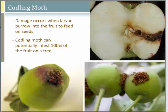Codling moth is the primary insect pest of apples and pears — the worm in the fruit. It's actually the larva or caterpillar of a moth, and it prefers to feed on the seeds of the apple, tunneling right through the flesh. It's such a successful pest that almost any untreated tree in Utah may potentially have 100% of the fruit infested. Infested fruit will have frass — the larvae's excrement — pushed out, which looks like sawdust on the outside.